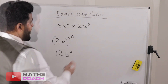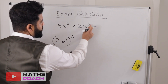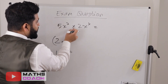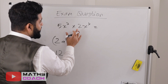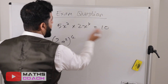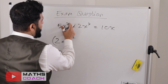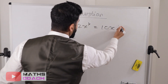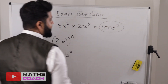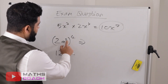We've got 5x to the power of 3 times 2x to the power of 4. Deal with the coefficients first: 5 times 2 is 10. Then since both terms have the same base x, add the powers: 3 plus 4 equals 7. The simplified answer is 10x to the power of 7.